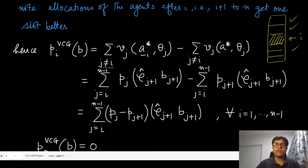If we look at the allocation where agent i is not present, that means all the agents which were allocated after i actually move one position above. Therefore we can take the subtraction of that quantity with the quantity where the allocation is the same but now agent i is also present.